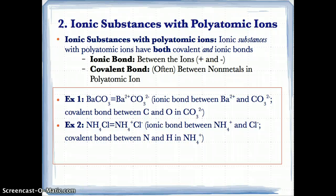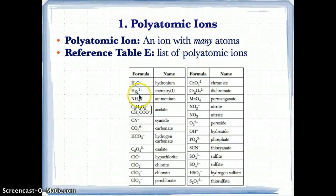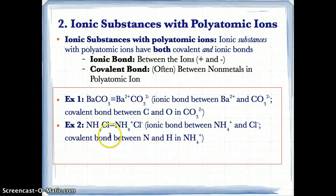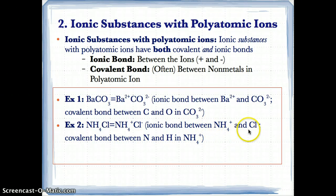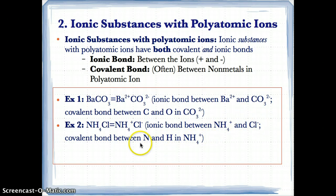For NH4Cl, we look up on Table E and find that NH4+ is ammonium, with a charge of +1. Cl has a charge of −1 according to the periodic table, as it gains electrons to become Cl−. Since NH4+ is +1 and Cl− is −1, there is an ionic bond between NH4+ and Cl− because they are oppositely charged ions that attract each other. The covalent bond is between N and H within the polyatomic ion NH4+, because N and H are both non-metals. The covalent bond is between the non-metals in the polyatomic ion, and the ionic bond is only between the positively and negatively charged ions.